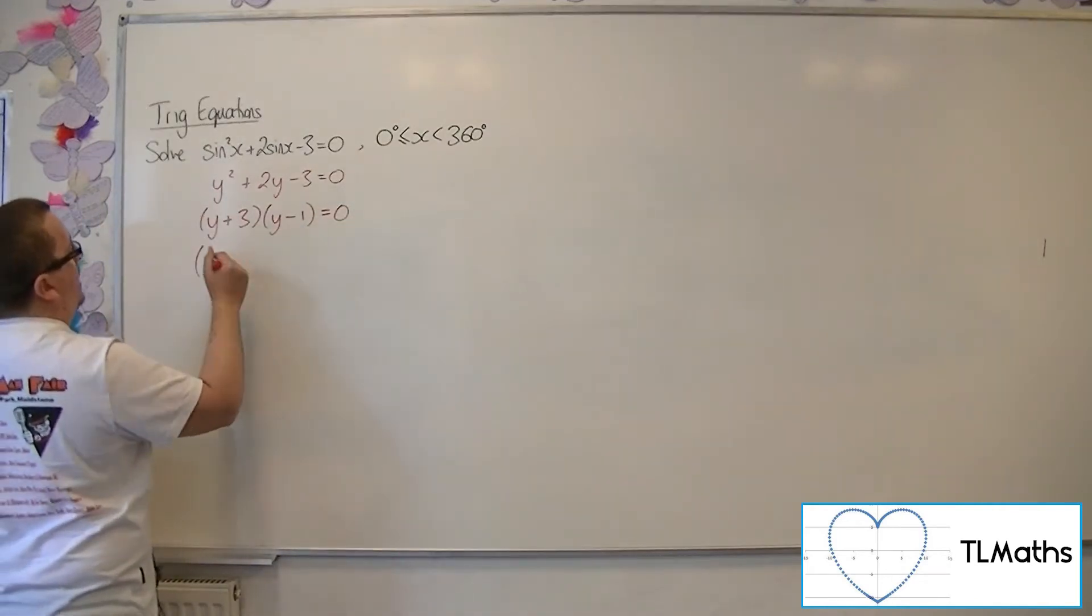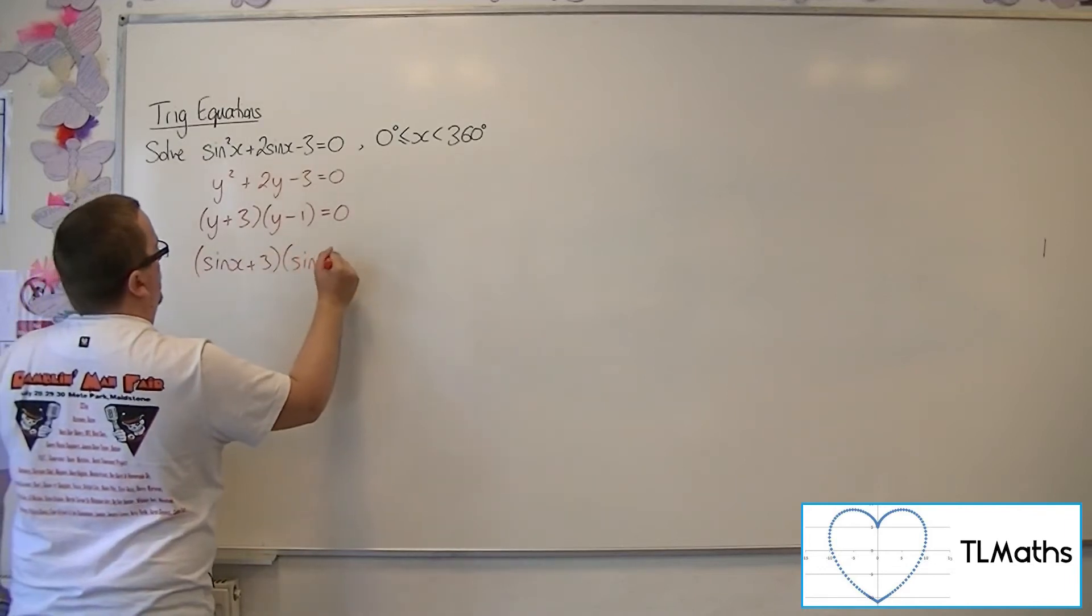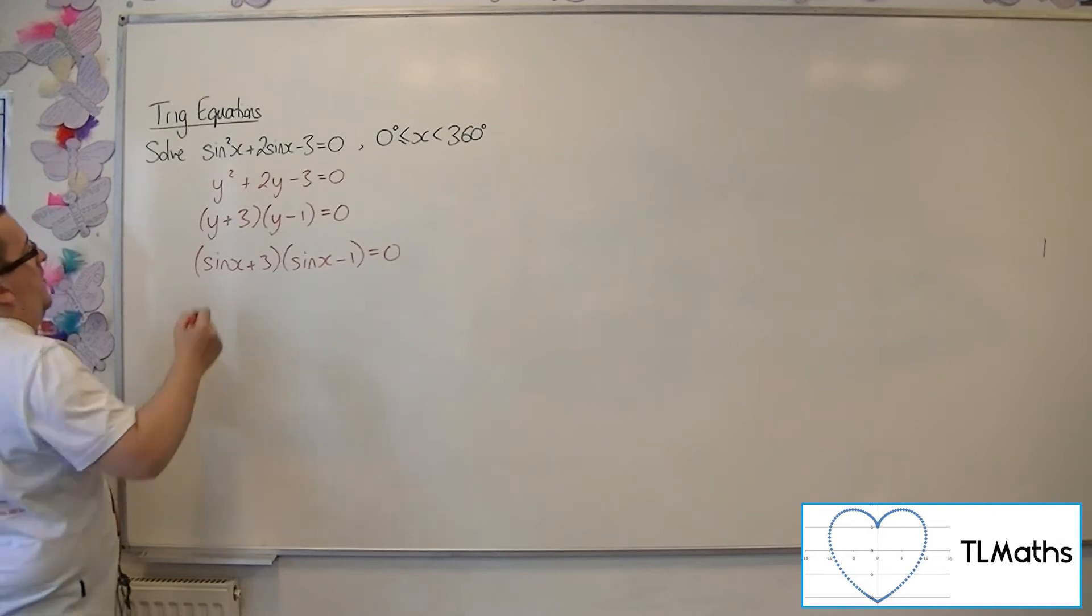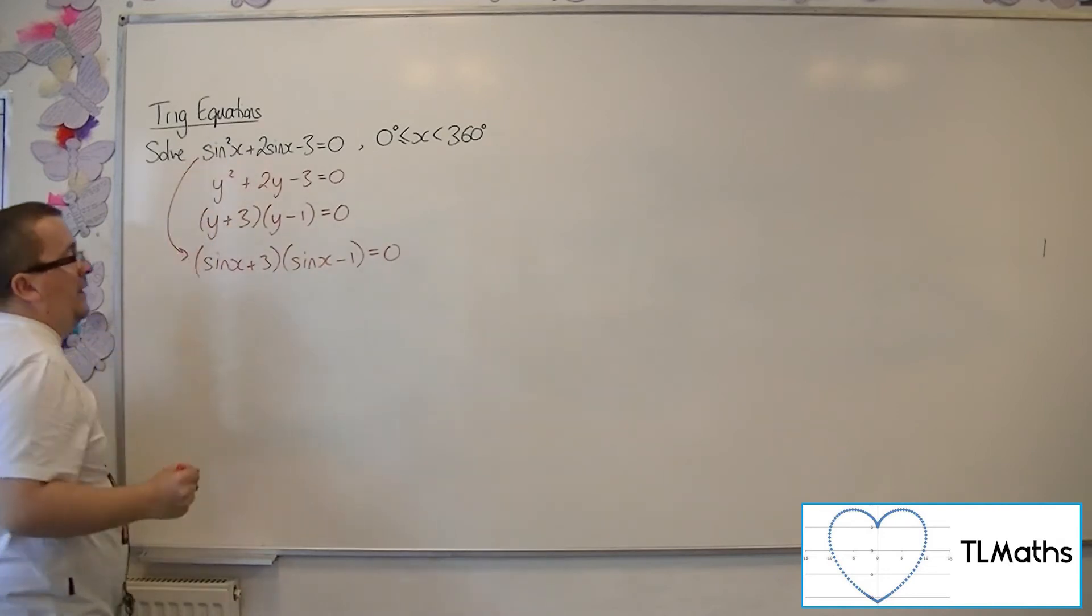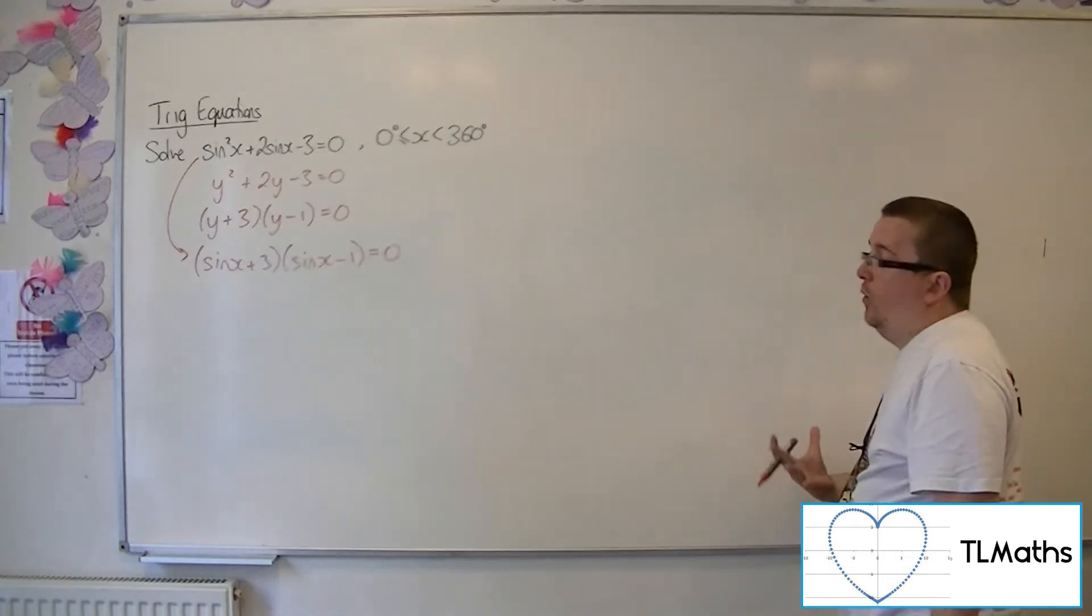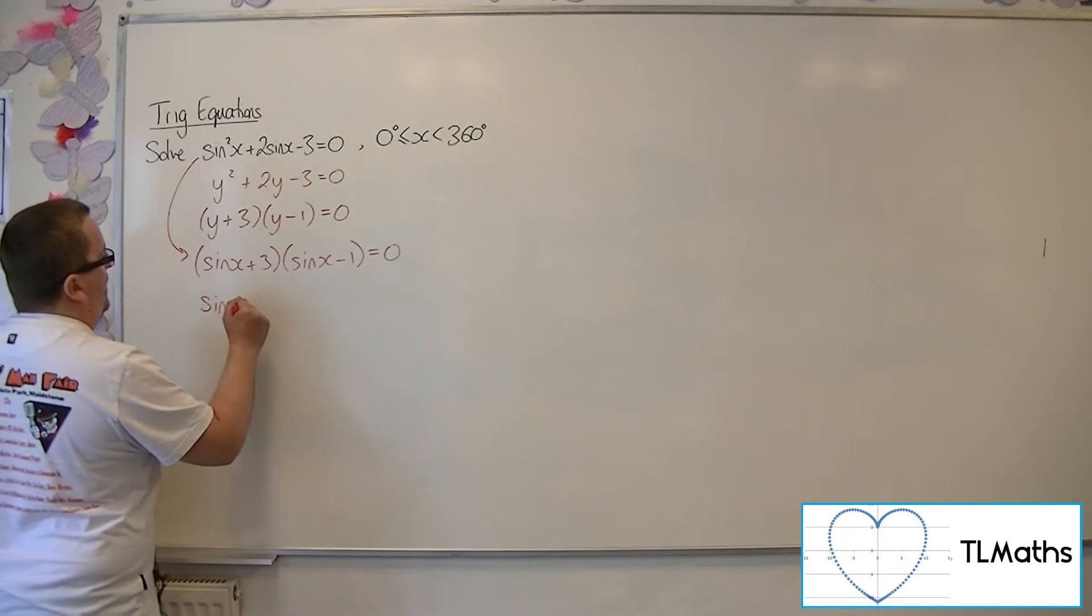So if you replace the y's back with sine x, then we have this quadratic equation. Now, if you can go straight from that step to that step, then that's perfectly fine. Because now what we have is that either sine x is minus 3 coming from that bracket, or sine x is equal to 1 coming from the second bracket.